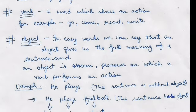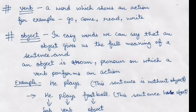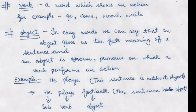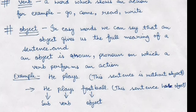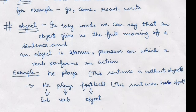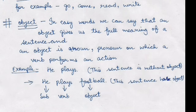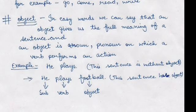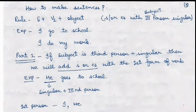Next is the object. In easy words, an object gives us the full meaning of a sentence. An object is a noun or pronoun on which a verb performs an action. For example, 'he plays' is a complete sentence but without an object — we don't know what he plays. But 'he plays football' — here 'he' is the subject, 'plays' is the verb, and 'football' is the object. This sentence gives us full meaning.